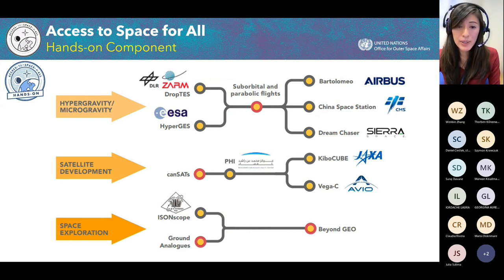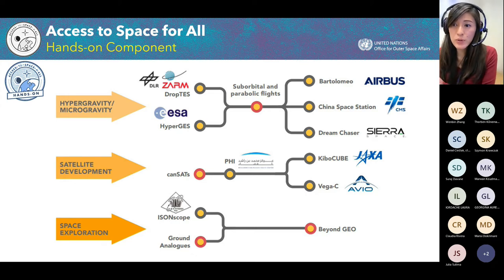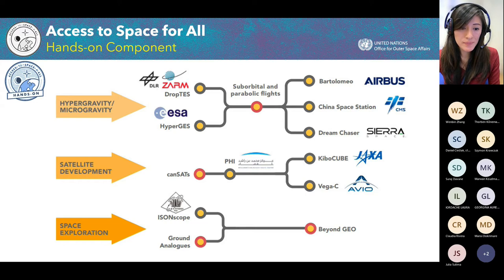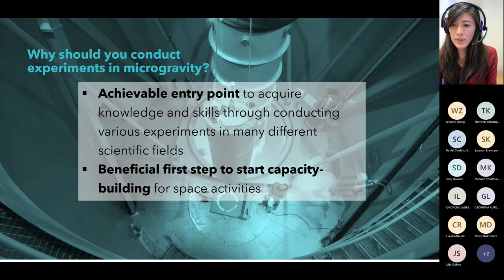Our initiative has three tracks: the Hypergravity and Microgravity track, aimed at building capacity for conducting experiments in orbit; the Satellite Development track, covering everything related to satellite development, deployment, and operation; and Space Exploration. Each track is supported by three components: the hands-on component — actual opportunities to do research and orbital experiments; the tools component — a collection of open-source tools free to everyone; and the education component — the theoretical knowledge supporting both. Drop Tests is our first on-ground program and one of the beginnings of the gradual learning path to conduct experiments in space.